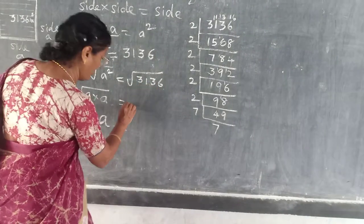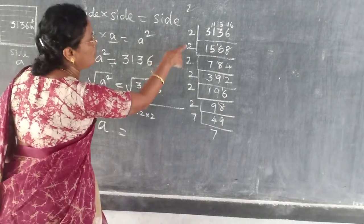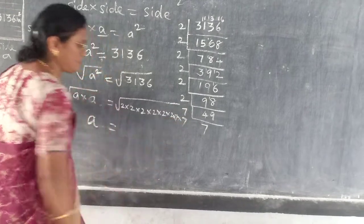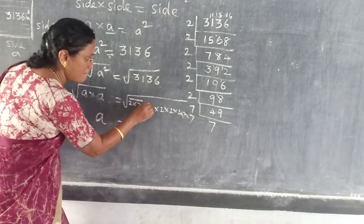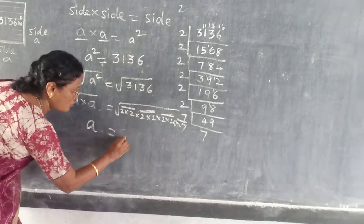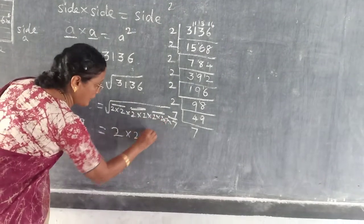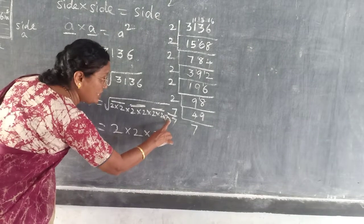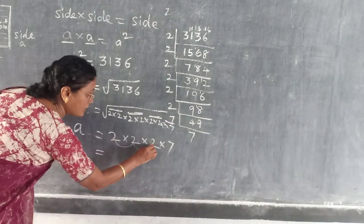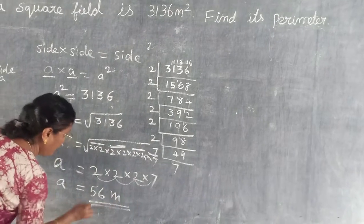So root of 3136 — out of these two twos how many twos do you take? One. Two into two, out of these two twos take one. Two twos are four, four twos are eight, eight sevens are fifty-six. So A equals fifty-six. What is the unit? Meters. So the side is fifty-six meters.